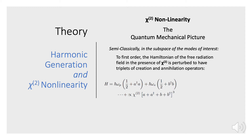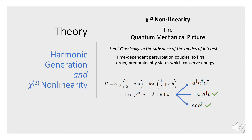How does this look quantum mechanically? Looking at the Hamiltonian semi-classically, in the subspace of our modes of interest with creation and annihilation operators for the two frequencies, to first order the Hamiltonian of the free radiation field in the presence of the chi-2 nonlinearity will be perturbed to have triplets of creation and annihilation operators — terms like triple creation of one frequency mode, or double creation of one mode with annihilation of another. Time-dependent perturbation theory tells us the perturbation couples predominantly to states that conserve energy: two photons of the first frequency are created while one of the second is annihilated, or vice versa.